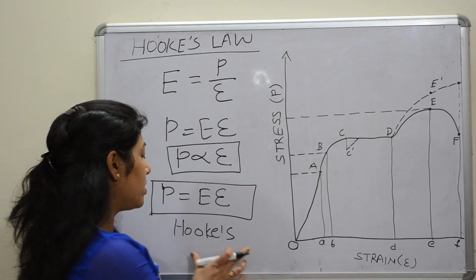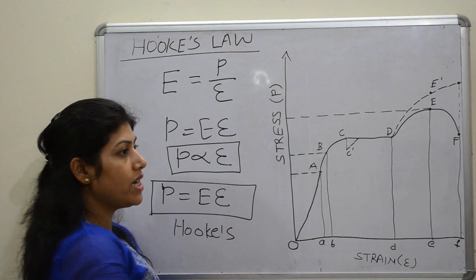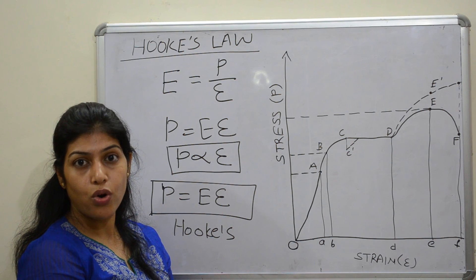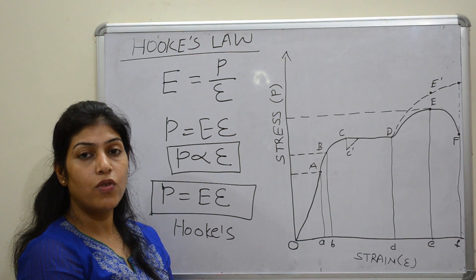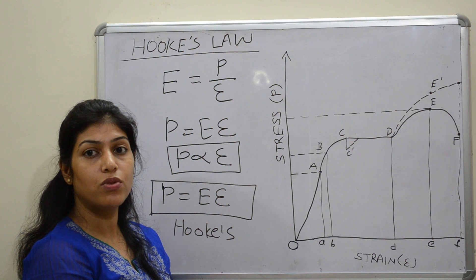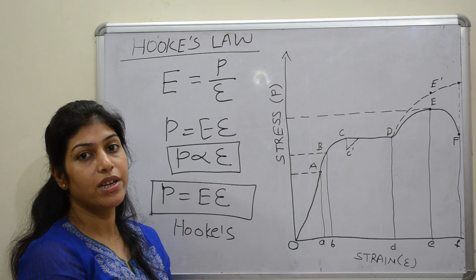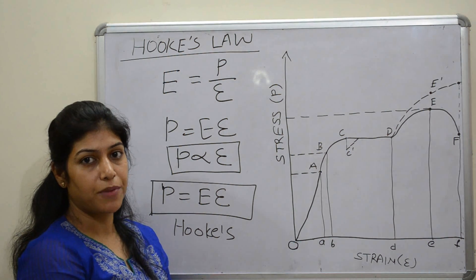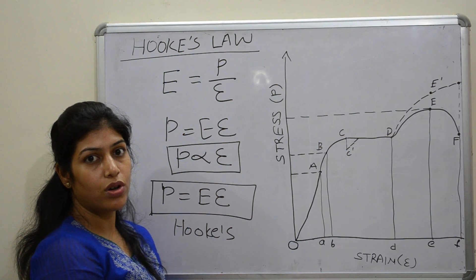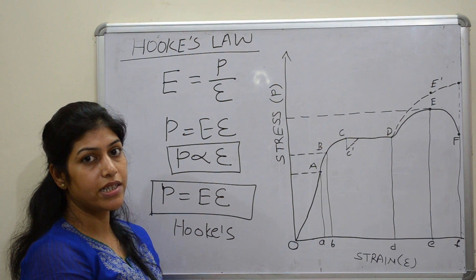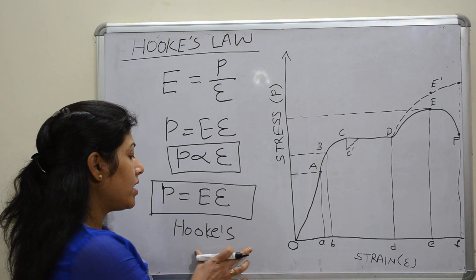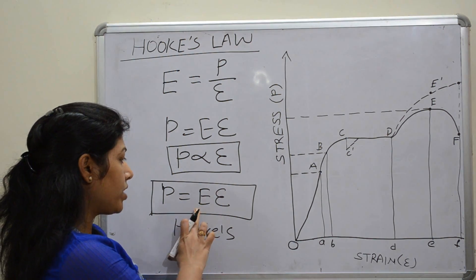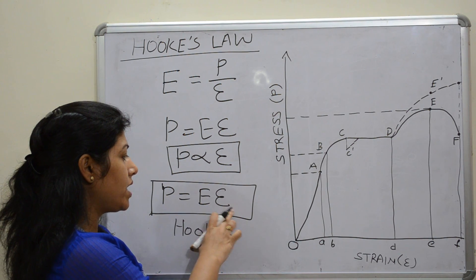Hooke's law, stress equal to E times strain, is named after the famous English scientist Robert Hooke who was the first person who introduced elastic behavior of materials like metal, wood, stone, concrete, etc. So Robert Hooke invented the elastic behavior of material and he also invented Hooke's law. In this equation, stress equal to E times strain.